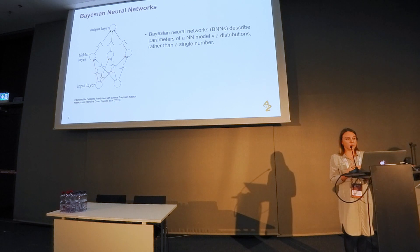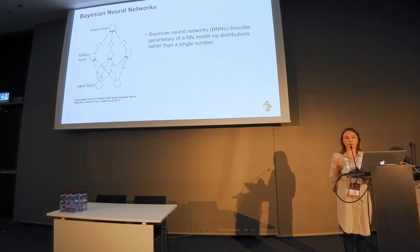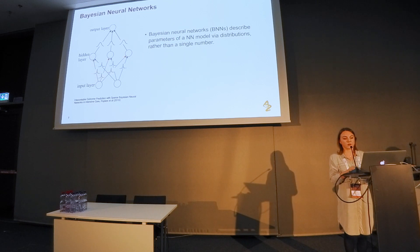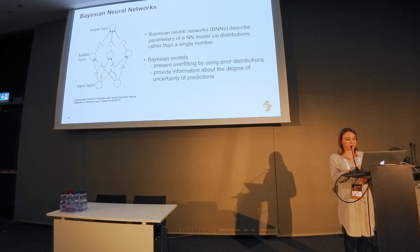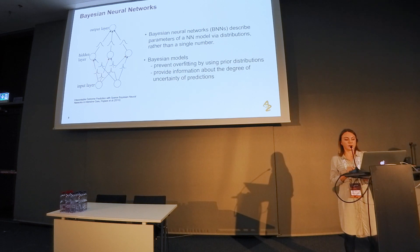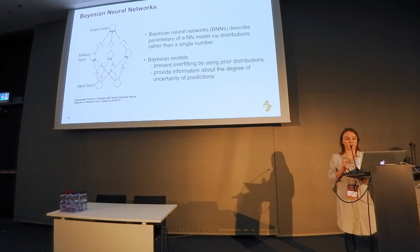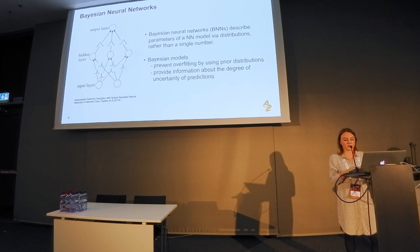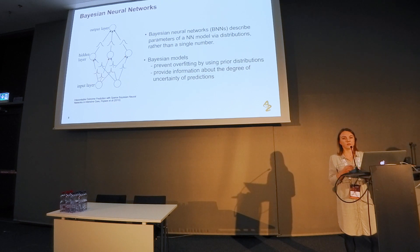Like any Bayesian model, Bayesian neural networks describe each parameter not as point estimates and confidence intervals, but rather each parameter is described as a distribution. Other advantages of the Bayesian framework include helping to prevent overfitting, and providing information about uncertainty in a very rich form.